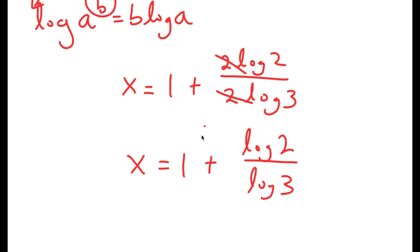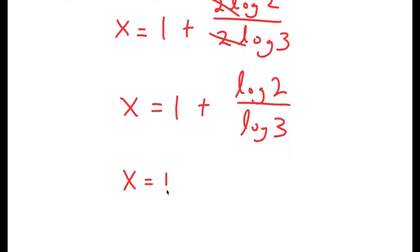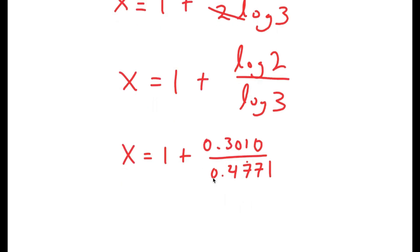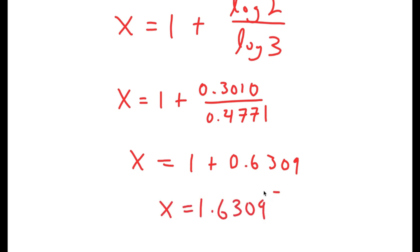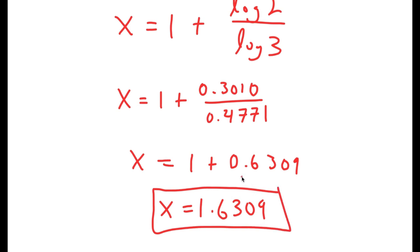Log 2 is equal to 0.3010 and log 3 is equal to 0.4771. Dividing these gives x equals 1 plus 0.6309, meaning x is equal to 1.6309. So this is my answer. Thank you.